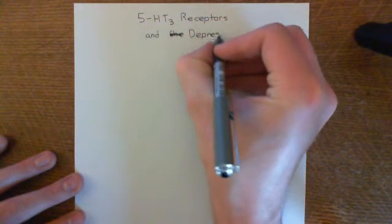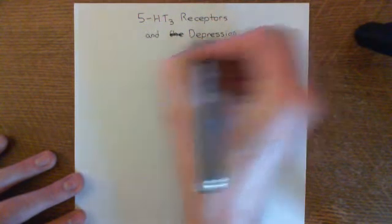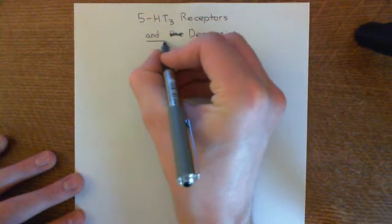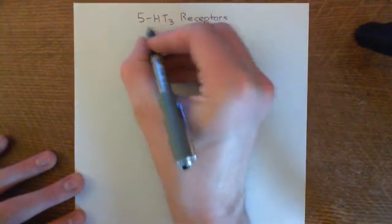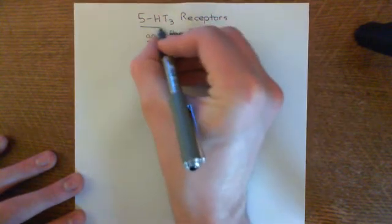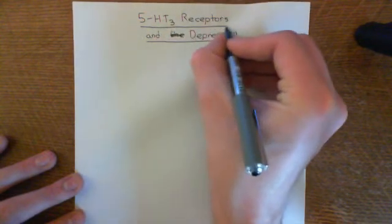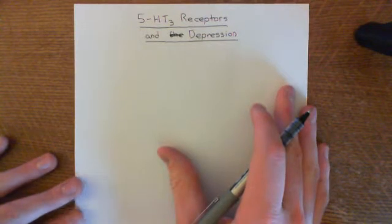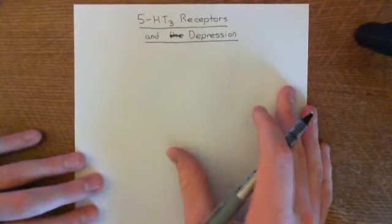We'll also see certain mutations in the 5-HT3 receptors which can predispose you to developing depression. Let's begin with the structure of the 5-HT3 receptor.